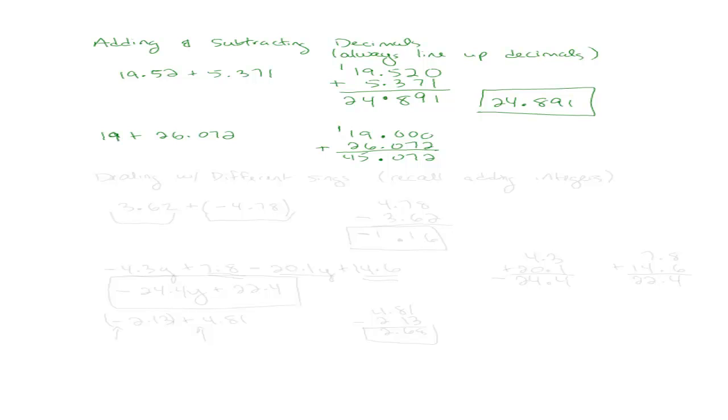Let's talk about dealing with different signs. So whenever we have different signs, we're going to recall the rules that we learned for adding integers. Recall adding integers. So say we wanted to add, let's show you what this looks like. It's 3 and 72 hundredths and add to that negative 4 and 78 hundredths. So back when we were talking about adding integers back in chapter 2, how do we add those numbers?